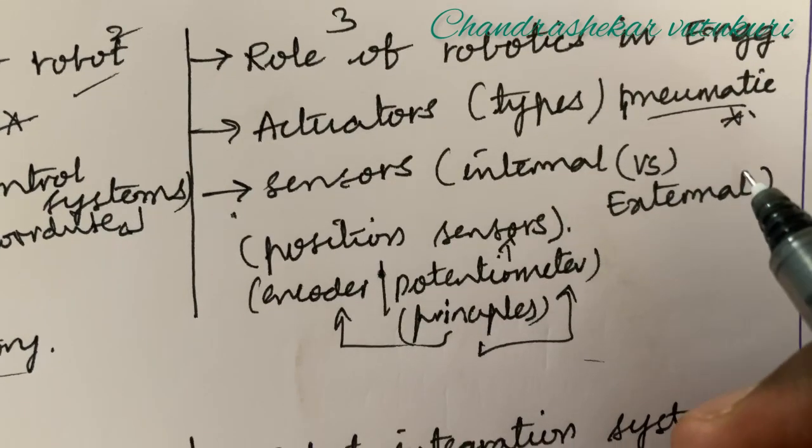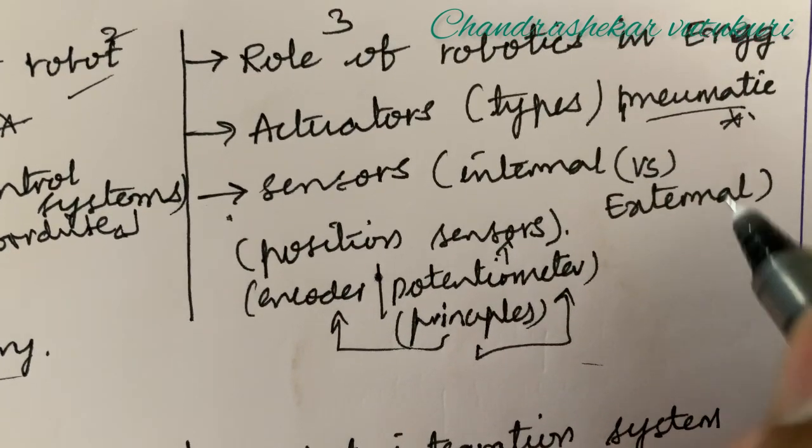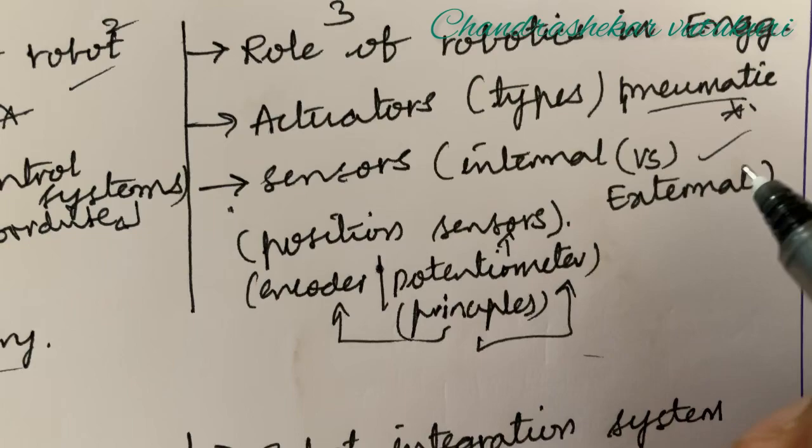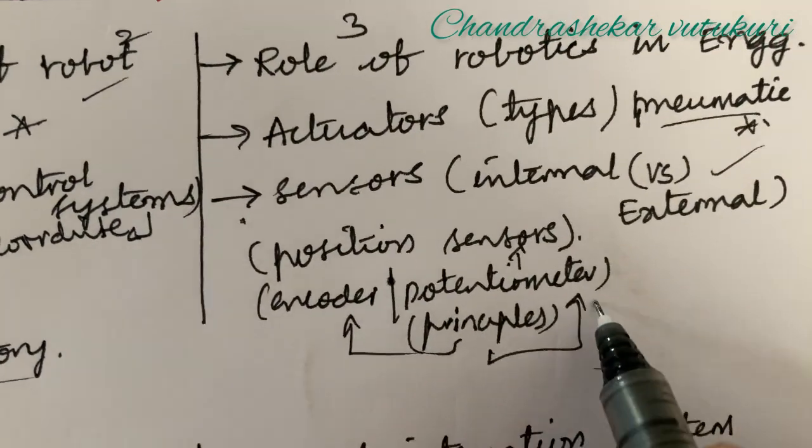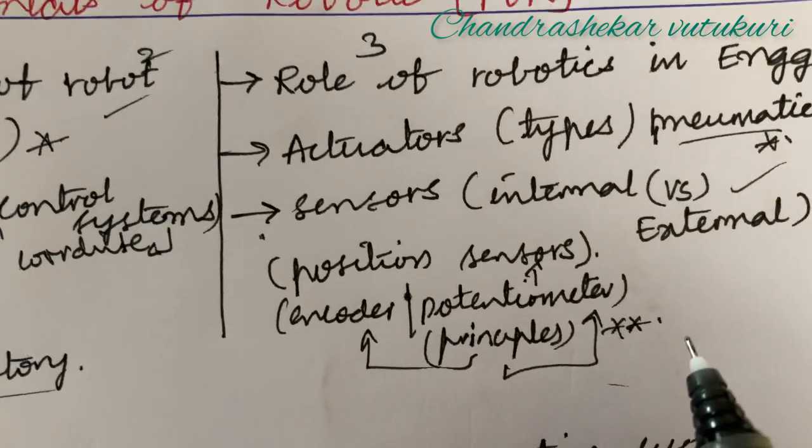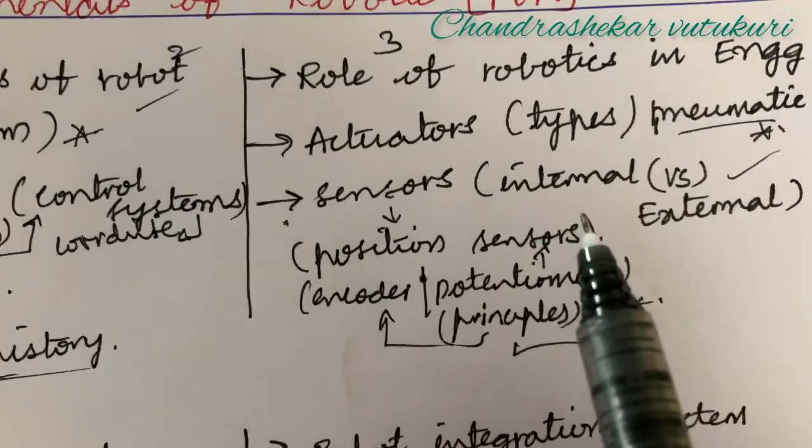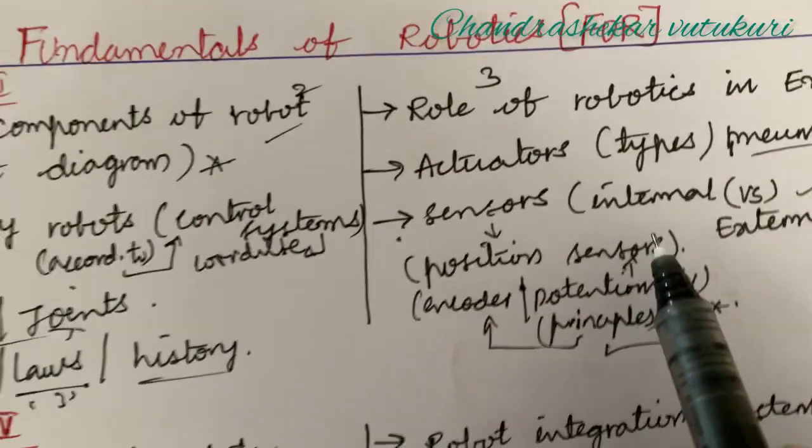The actuators as well as the types, and the pneumatic actuators is said to be one of the topmost questions. And the sensors, the internal and the external sensors and their difference, related to the position sensor, related to the principle of encoder as well as potentiometer. They're asking several times. You need to work out different types of sensors in depth to complete unit one.